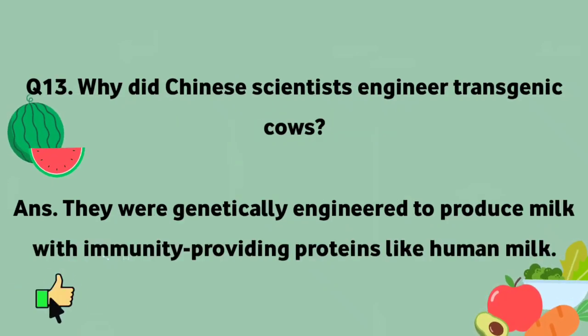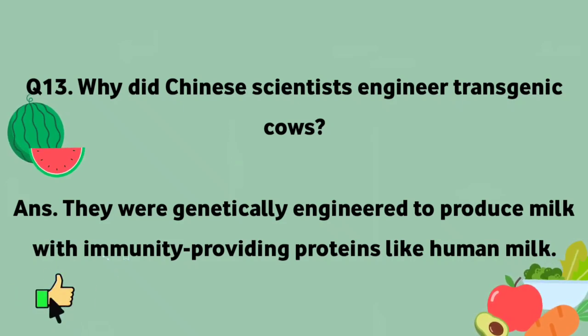Why did Chinese scientists engineer transgenic cows? They were genetically engineered to produce milk with immunity-providing proteins, similar to human milk.